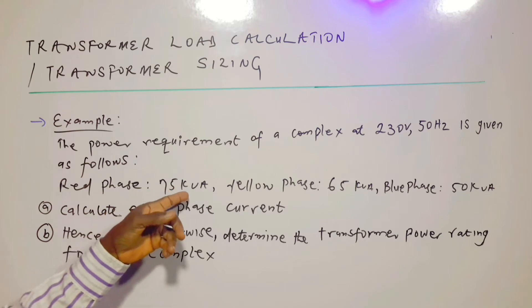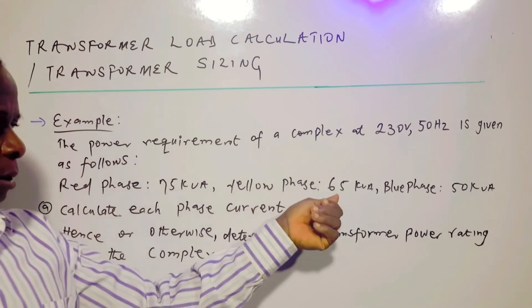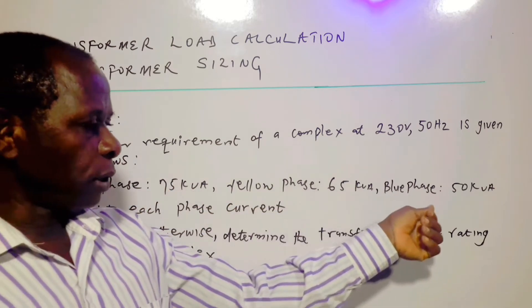Red phase load: 75 kVA. Yellow phase: 65 kVA. Blue phase: 50 kVA.